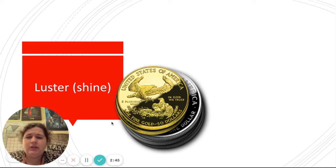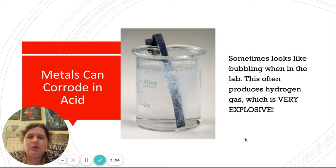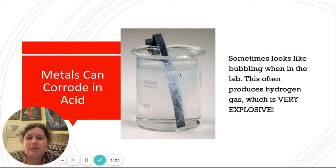Metals are also lustrous, meaning that they're shiny, like these gold and silver coins. And some metals can actually be corroded — acids, bases, and other agents can eat away at metals. Here's an example of what corrosion might look like in a lab. In a few weeks we'll get to types of chemical reactions and actually see metal being corroded by acid. You can see all these little bubbles — that's hydrogen gas being produced, and hydrogen gas is extremely explosive.